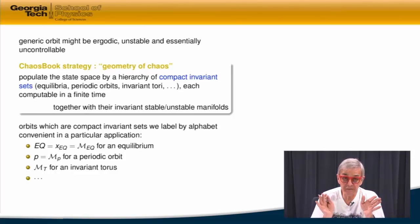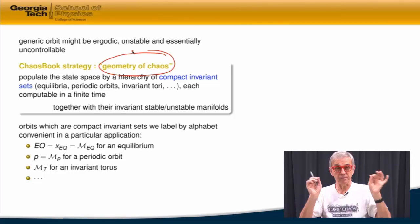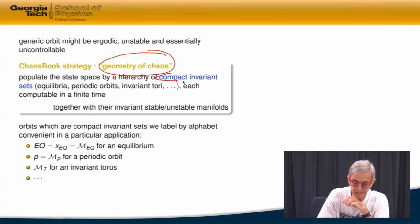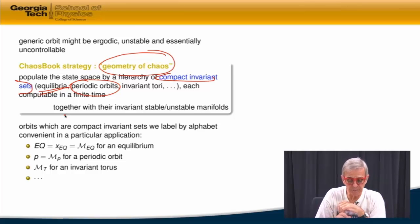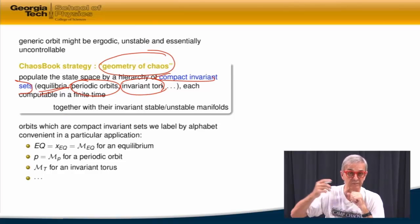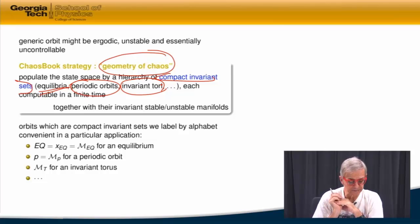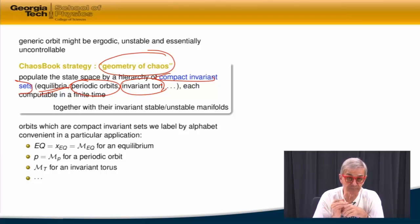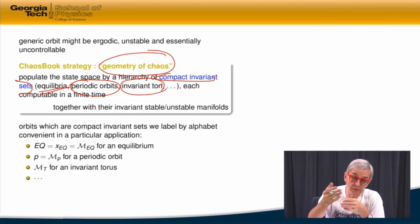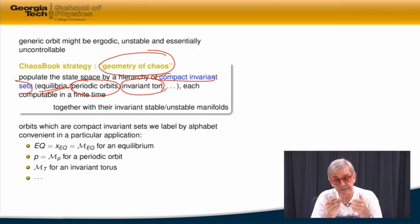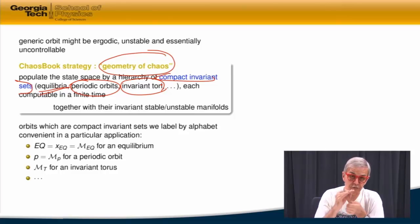Our strategy will be to figure out the geometry of chaos in the following way: populate that space with compact invariant sets — equilibria, periodic orbits. There could be more complicated things called tori, two-dimensional surfaces on which you stay. They're very familiar from Hamiltonian dynamics but are more general than that. They have the advantage that they can be computed in finite times. For an equilibrium, you just compute it and know it forever. For periodic orbits, you just need one period, which a computer can do. For invariant tori, you have to work a little harder, but there are two numbers that specify any point on the torus, and that's what you have to solve.